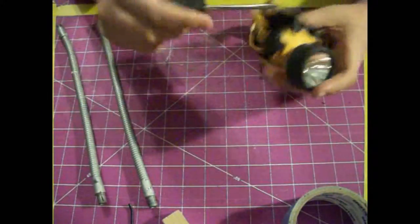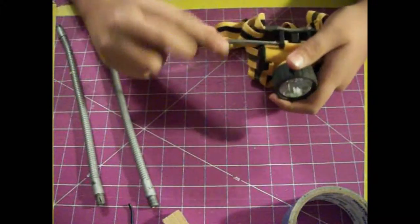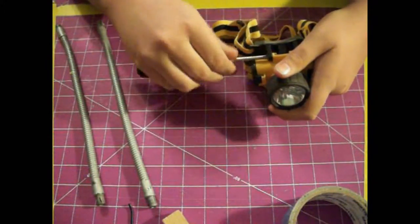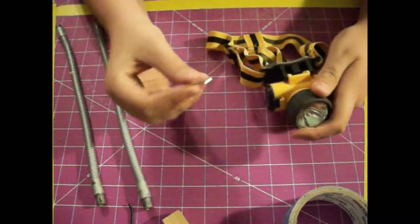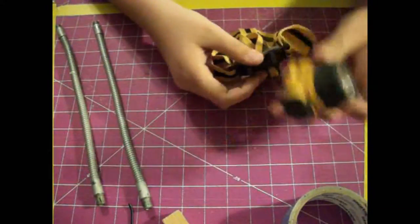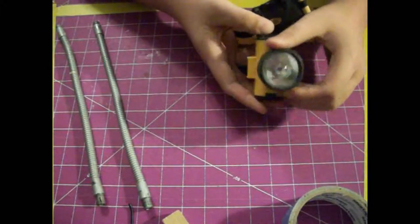First off, let's start with the headlamp. There's a screw over here, just take that out. Not going to need it. Not going to need this either, so it still works with a flashlight but pretty bad.